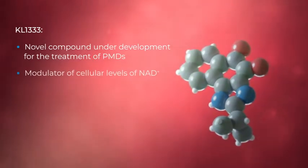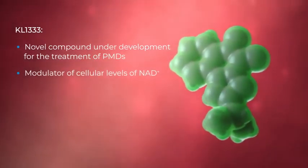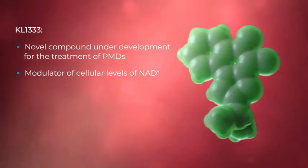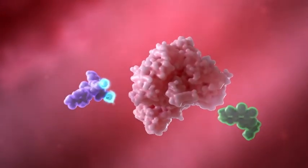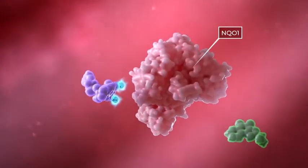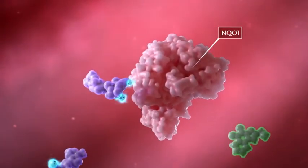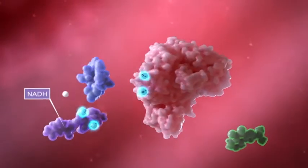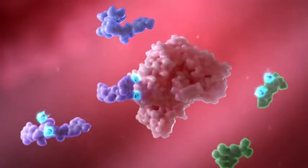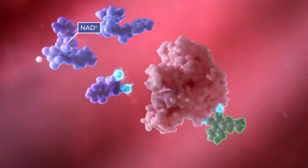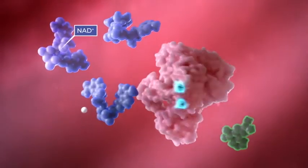KL1333 acts as a modulator of cellular levels of NAD+ by functioning as a substrate for the enzyme NQO1. NQO1, using NADH as a cofactor, transfers two electrons to KL1333 to produce NAD+, thus increasing intracellular NAD+ levels.